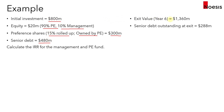We assume that the exit happens in year six. The exit enterprise value will be $1,360 million. At exit, the senior debt outstanding will be $288 million. With that, we'll calculate the IRR for the management and also the PE fund separately.